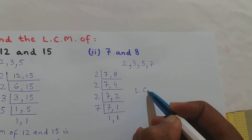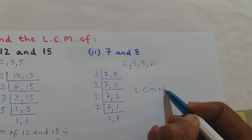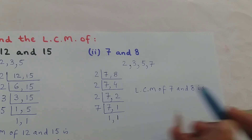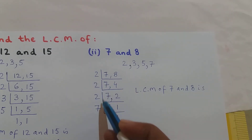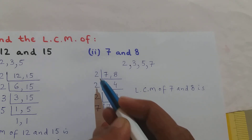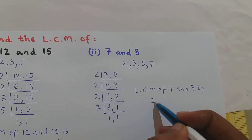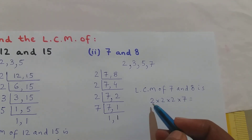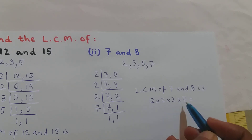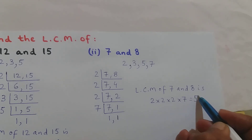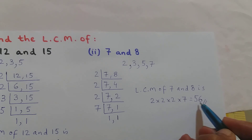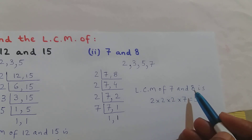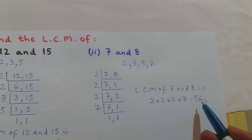The LCM of 7 and 8 is found by multiplying: 2 × 2 × 2 × 7. That gives 2 × 2 = 4, 4 × 2 = 8, and 8 × 7 = 56. So the LCM of 7 and 8 is 56.